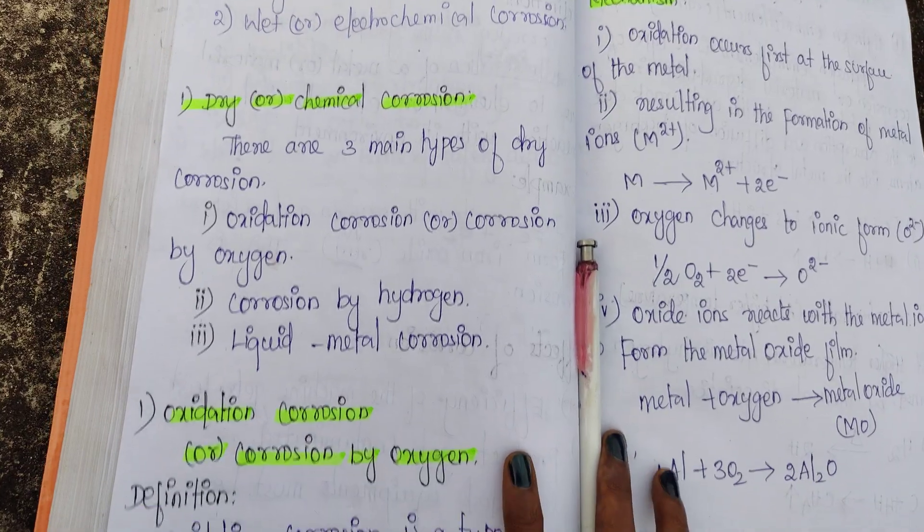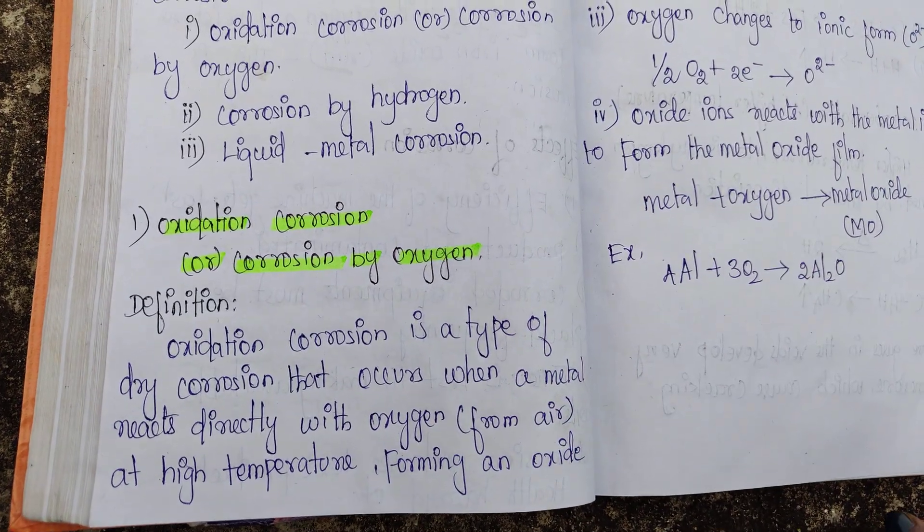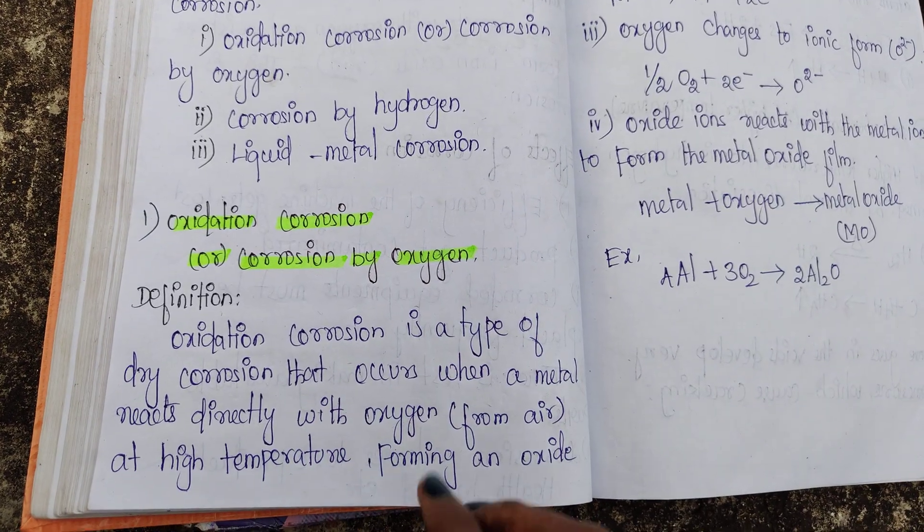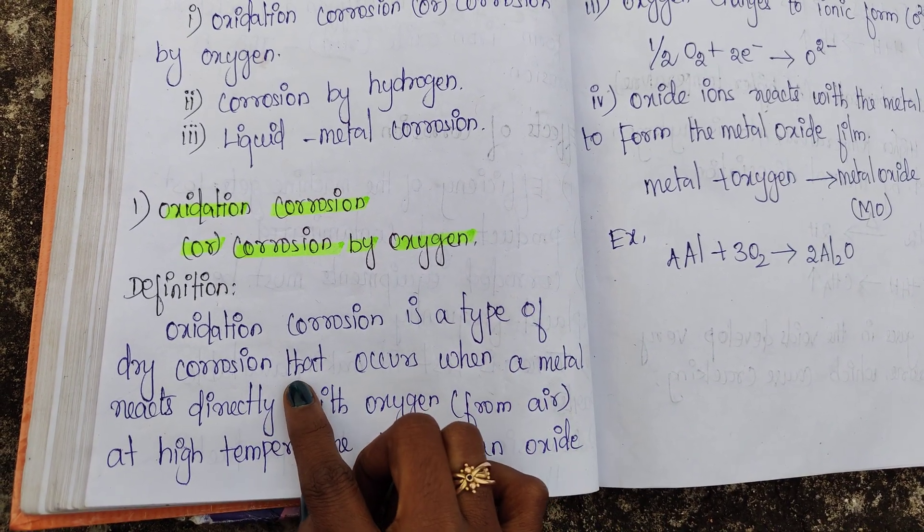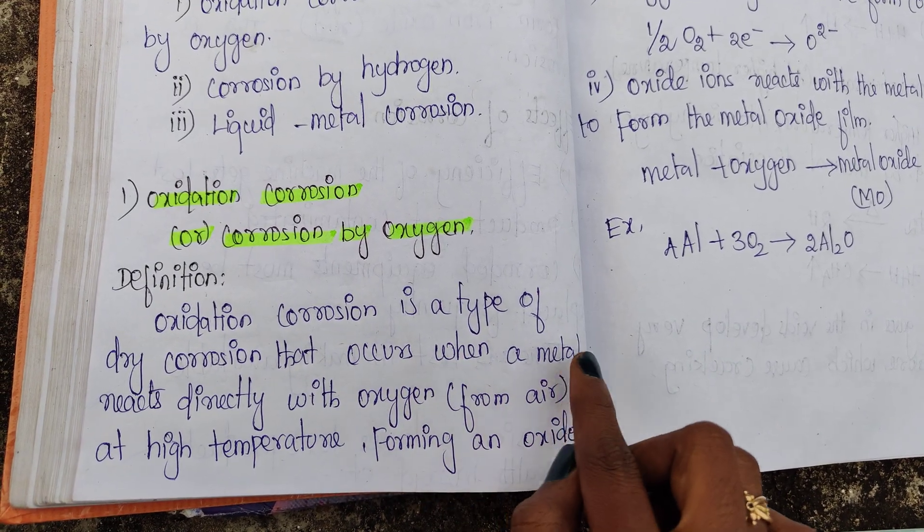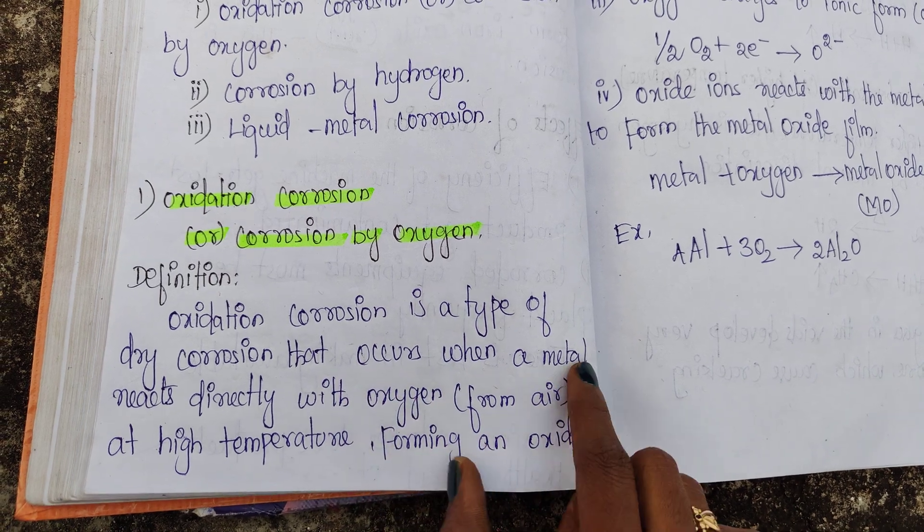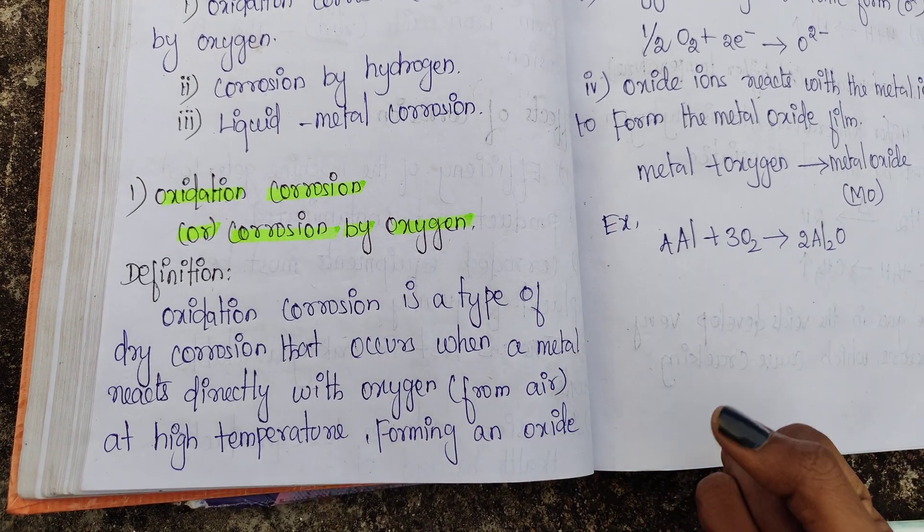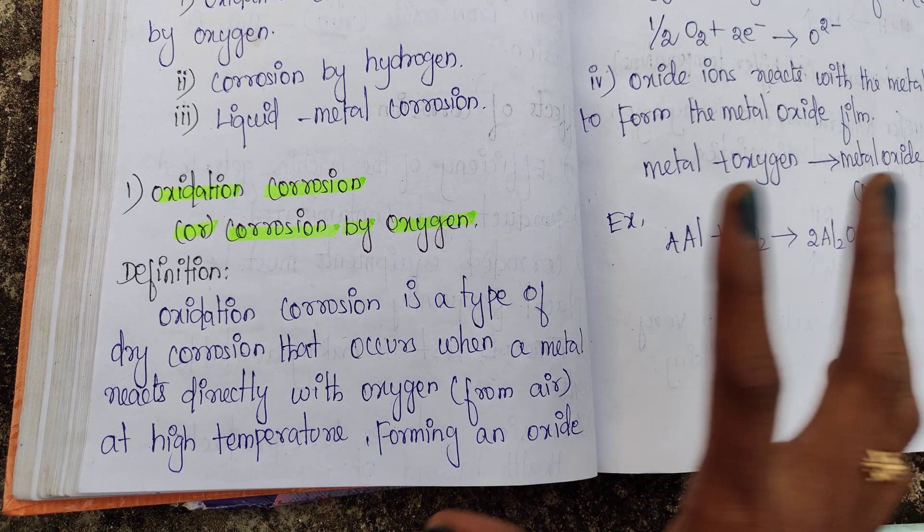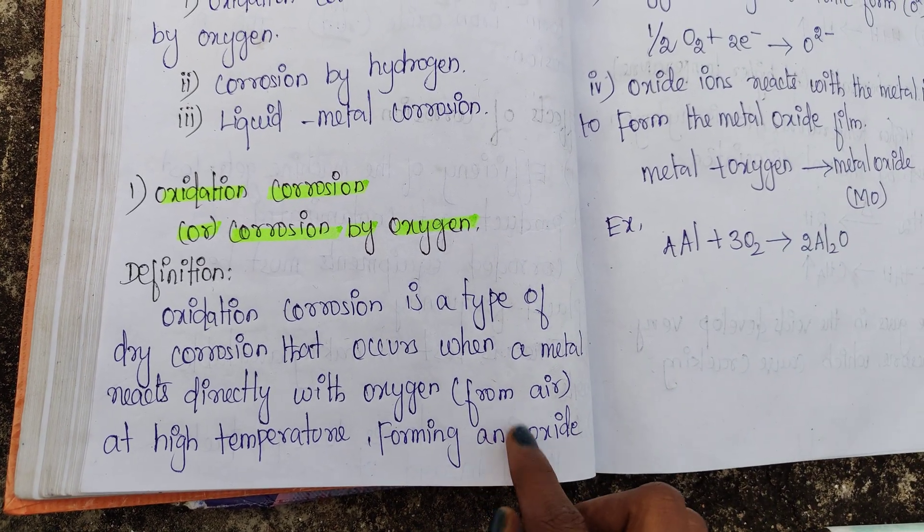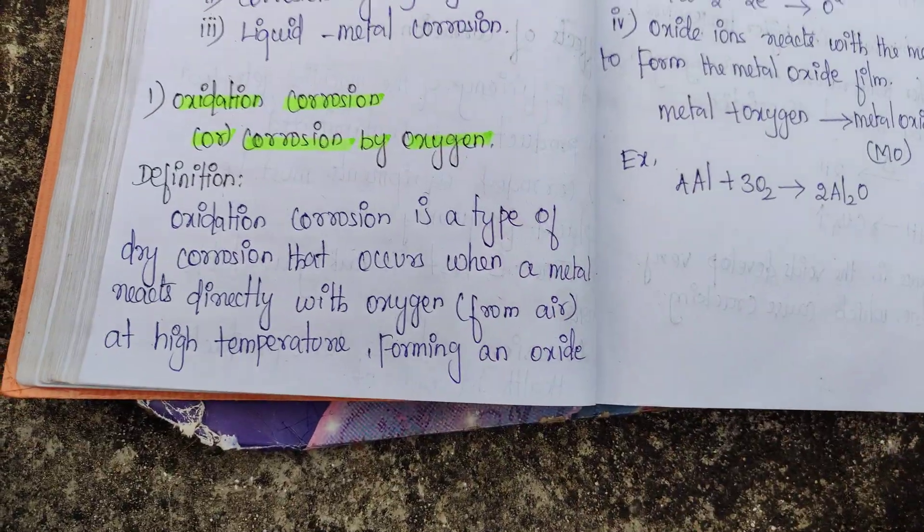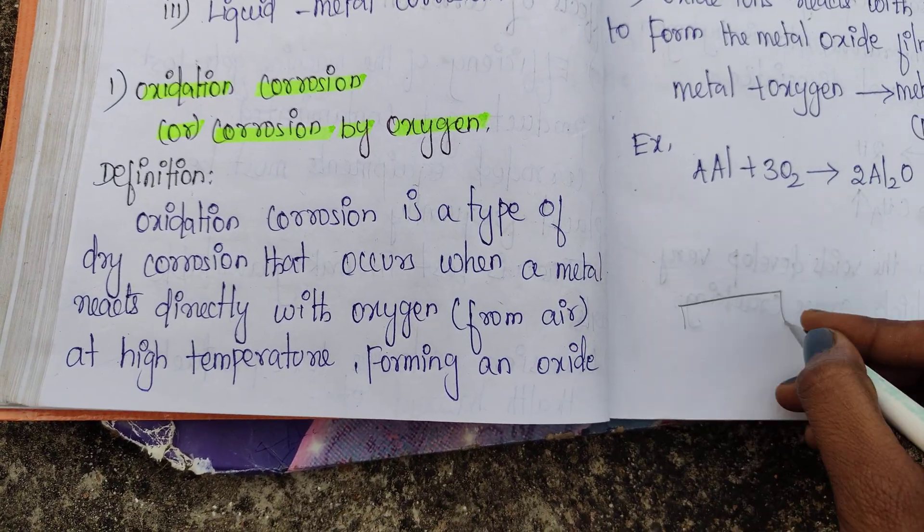Oxidation corrosion is a type of dry corrosion that occurs at high temperature, forming an oxide layer on the metal surface.